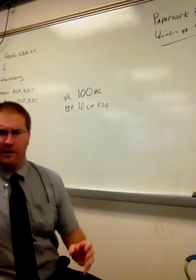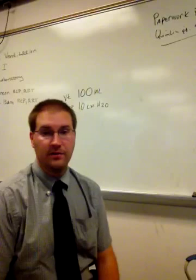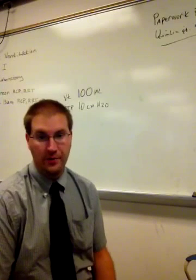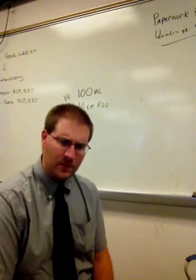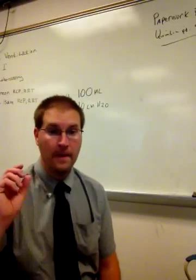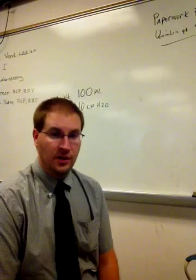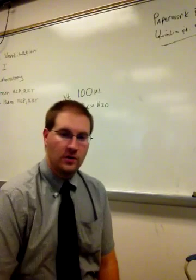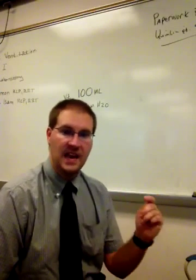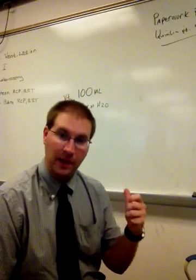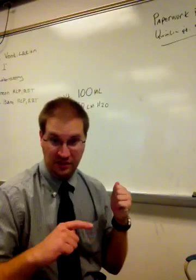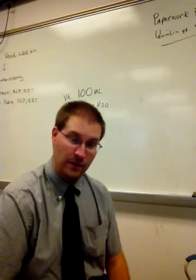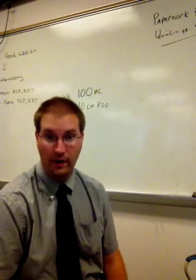What you do is you dial in a very low tidal volume. Generally, I use 100 milliliters. They recommend anywhere between 100 to 200 milliliters. I use 100 milliliters because generally the math is a lot easier. You go ahead and put a 100 milliliter tidal volume in. You set whatever rate you want. Generally, a little slower so that allows you to look at the PIP or the peak inspiratory pressure. You set the volume and then you occlude the end of the circuit.